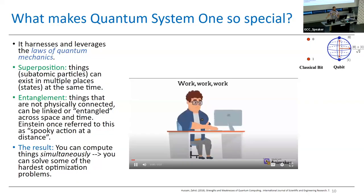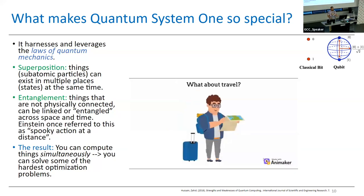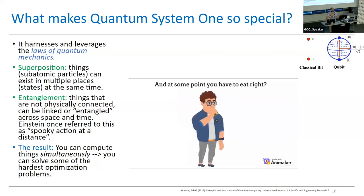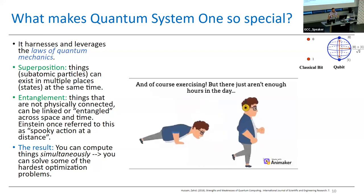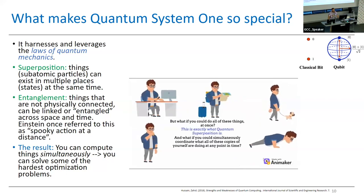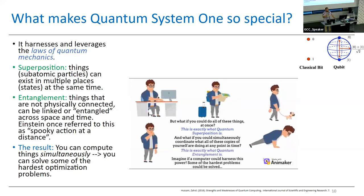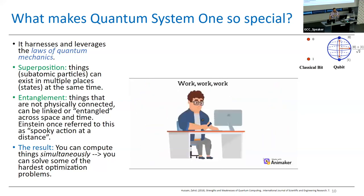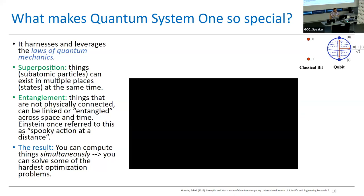Forget about everything I just said — what exactly makes these machines very special? Every day you have a bunch of stuff to do: work, travel, make food, exercise, but there just aren't enough hours in the day. What if you could do all of these things at once? That's exactly what quantum superposition is. What if you could coordinate what all these different copies of yourself are doing? That's exactly what quantum entanglement is. Give this power to a computer and the result is the ability to compute things simultaneously, meaning you can deal with much larger matrices and handle some of the world's hardest optimization problems.